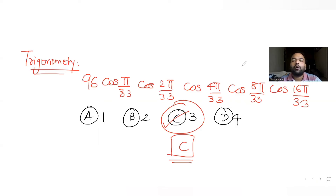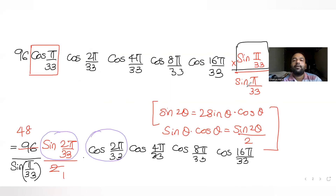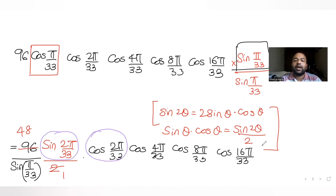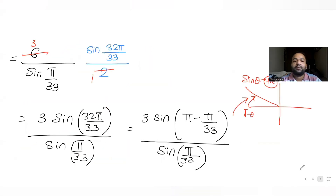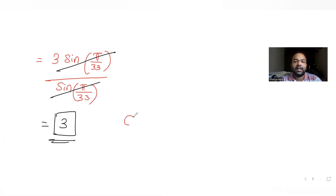To summarize: we multiplied and divided by sin(π/33) in the numerator and denominator, then repeatedly used sin(θ)·cos(θ) = sin(2θ)/2 across all five steps until we got sin(32π/33)/sin(π/33). Finally, using sin(π − θ) = sin(θ) gave the answer as 3, matching option C.